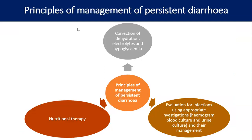Principles of management of persistent diarrhea: first correct dehydration, electrolyte imbalance, and hypoglycemia. Then evaluate for infection using appropriate investigations like hemogram, blood culture, urine culture, and manage accordingly. Nutritional therapy is also to be given.